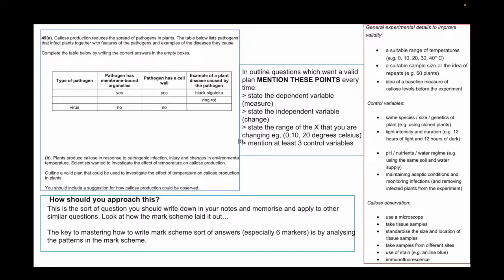Now this one, don't freak out, there's a lot going on. Let me explain. Here's a question. What I would do in this case is, part A is just a fill-in. I kept it there because I wanted to show you the sort of vibe of the question. But in part B, what I would read straight away is this: outline a valid plan that could be used to investigate the effect of temperature on callous production in plants. You should include a suggestion for how callous production could be observed. This specific question is something you should write on notes, memorize it, understand it as well.